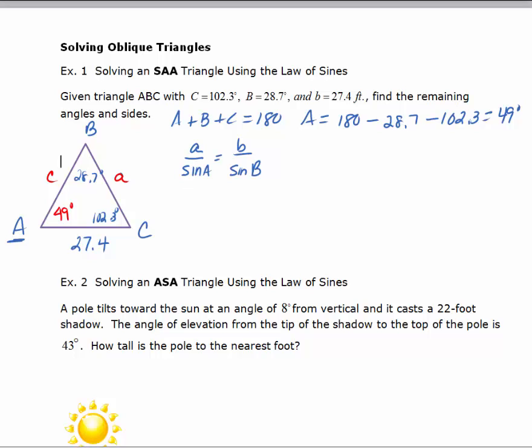Here I'll have a, which I don't know what that is, over the sine of 49 degrees equals b, which is 27.4, that's side b, over the sine of 28.7 degrees. I need to cross multiply to solve. So I have a times the sine of 28.7 equals 27.4 times the sine of 49.